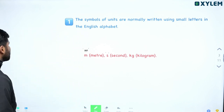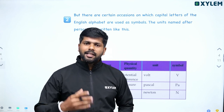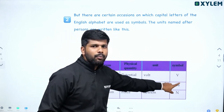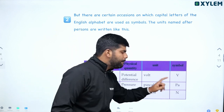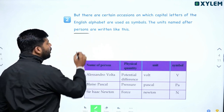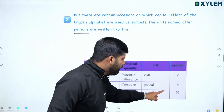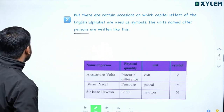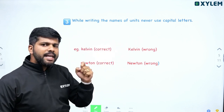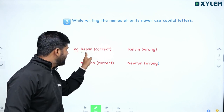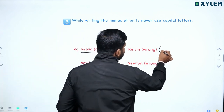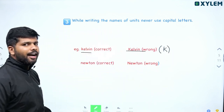But we also use capital letters in some cases. For example, Newton — we use capital 'N' for force. If the units are named after a person, a scientist, we use a capital letter symbol. For example, Kelvin — we use capital letter 'K'. So units named after scientists get capital letter symbols.